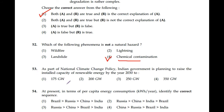Question number 53: As part of national climate change policy, the Indian government is planning to raise the installed capacity of renewable energy by the year 2032. Correct option is 4: 350 gigawatts.